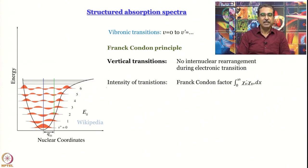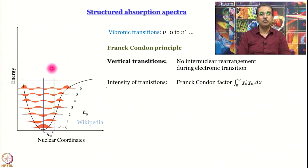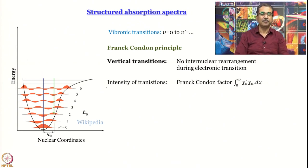The Franck-Condon factor is the integral of the product of the vibrational wave function from which the transition originates and the vibrational wave function of the energy level to which the transition goes. Essentially it is a numerical integration — we will see how it is done.